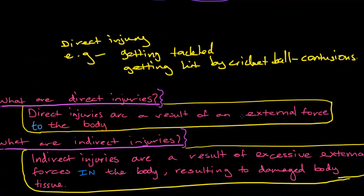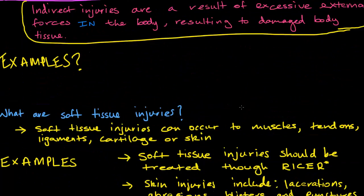Now, what are indirect injuries? Indirect injuries are a result of excessive forces inside the body which result in damaged body tissue. Imagine if you were bench pressing and you did not bench press correctly — the forces inside your body, on the pectorals for example, could have been excessive and therefore resulted in damaged body tissue. Indirect injuries refer to forces inside the body, not external. The bench pressing example is a simple one to remember.